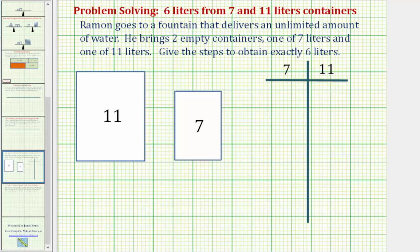To keep our steps organized, we'll use this table here, where the first column will tell us how much water is in the seven-liter container, and the second column will tell us how much water is in the eleven-liter container. To begin, we'll fill up the seven-liter container, so we'd have seven liters here and zero liters here. Next, we'll pour these seven liters into the eleven-liter container, so we'd have zero liters here and seven liters here.